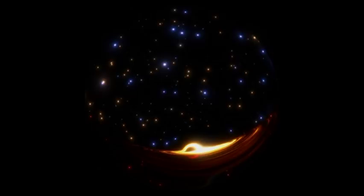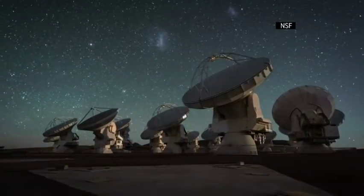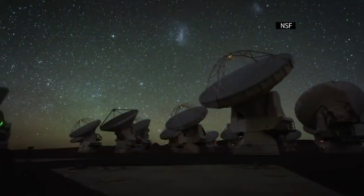The Event Horizon Telescope is a project of coordinating different telescopes all over the world in simultaneous observations to image a black hole. The way it works is all of these telescopes around the world look at the same object at the same time.